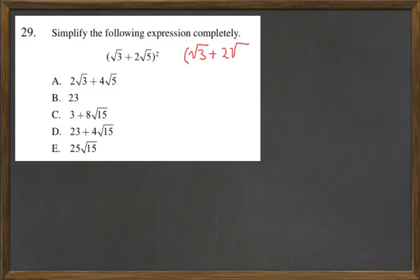So it ends up looking like this. Alright, and so using the FOIL method we're going to take square root of 3 times square root of 3. Well that just gives us 3.